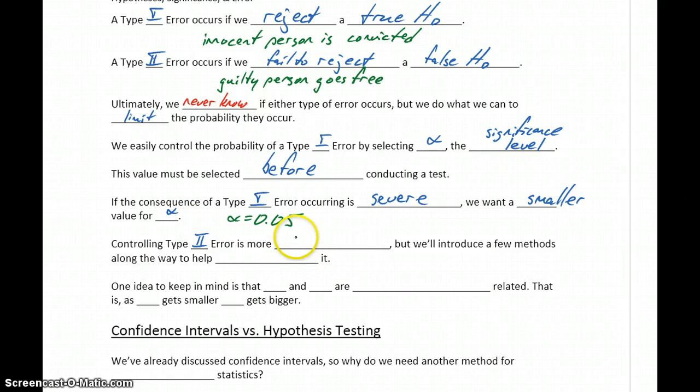Controlling Type II error is a bit more complicated and not something we'll really go into too in-depth in this class. But throughout the course of some of the topics that we cover, we will introduce some methods to help reduce that.